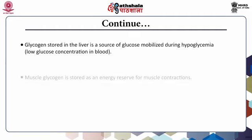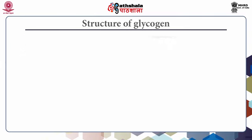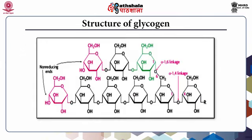Glycogen stored in the liver is a source of glucose mobilized during hypoglycemia or low glucose concentration in the blood. Muscle glycogen is stored as an energy reserve for muscle contractions. In plants, energy is stored in the form of starch. Glycogen is structurally very similar to amylopectin but more extensively branched and compact than starch.